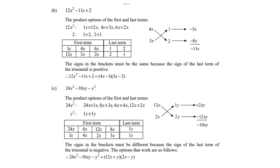The signs in the brackets must be different, because the sign of the last term of the trinomial is negative. The options that work are as follows: 12x plus y, 2x minus y.